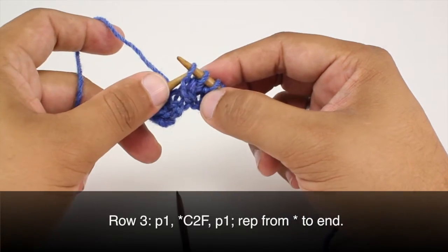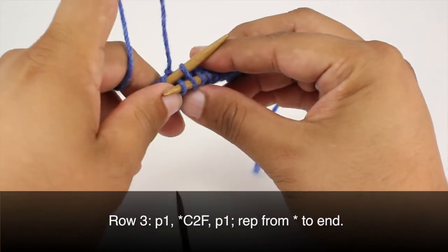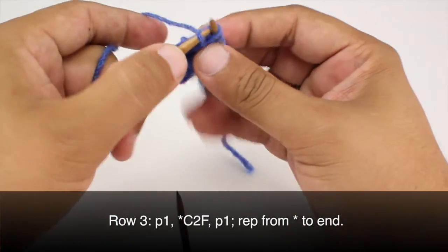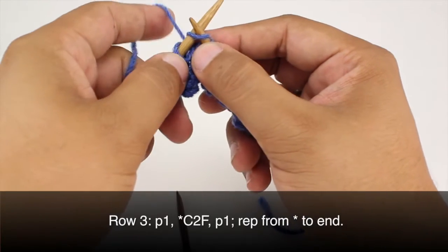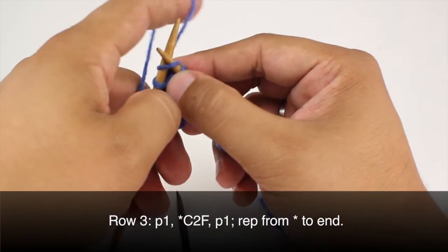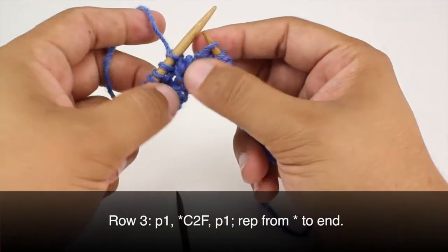So to do this we're going to knit into the back loop of the second stitch like so. Then we'll bring the yarn around to the front and go into the first stitch and then knit that stitch and pull both stitches off together.